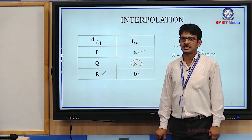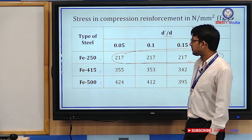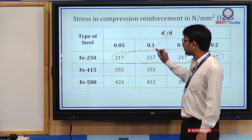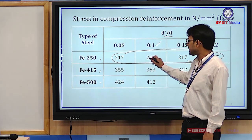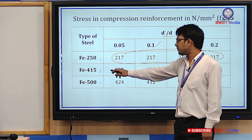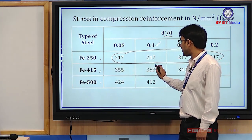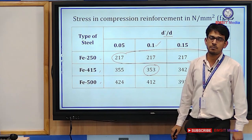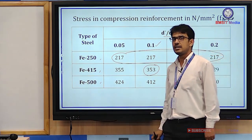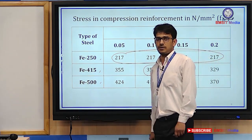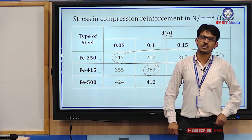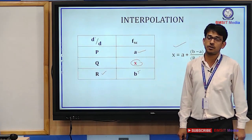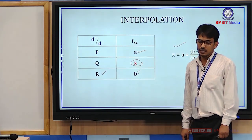If d'/d comes out exactly as 0.1, for Fe415 we can directly read fsc = 353 N/mm² from the table. Whether interpolation is required depends on the condition — if the value falls exactly at a table entry, we read it directly; otherwise we interpolate.